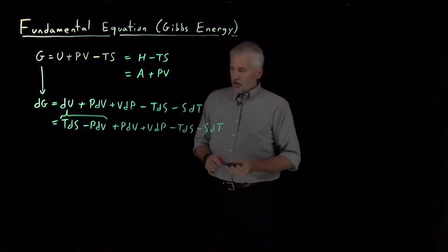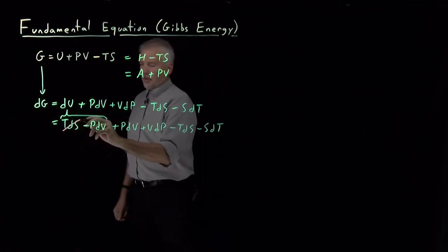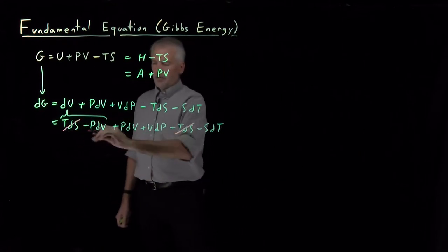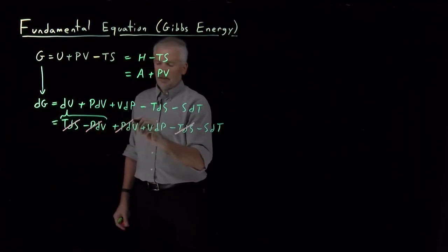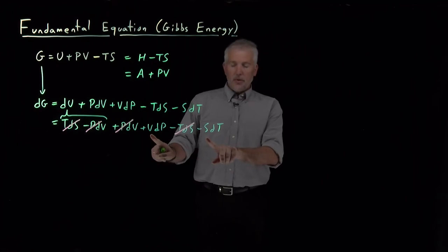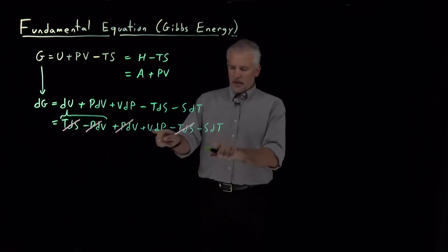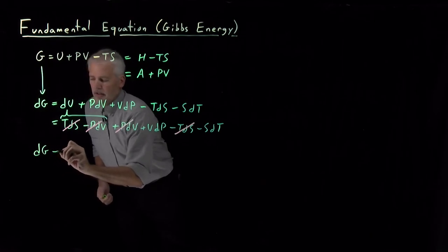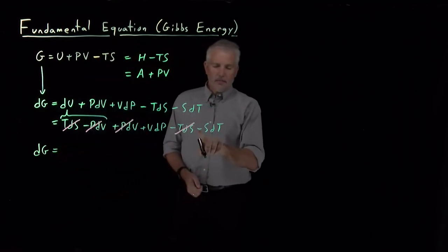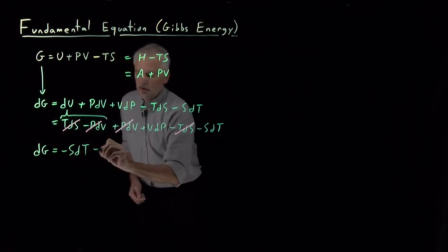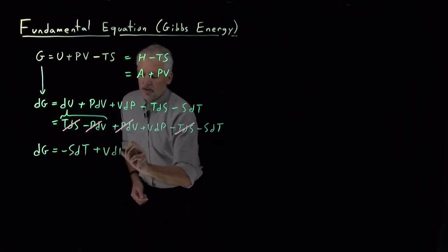There's now quite a bit of cancellation that happens. This TDS term cancels a minus TDS term. I have a minus PDV term that's going to cancel a positive PDV term, leaving us with just two of these when we're done. And if I switch the order of those two, I'll write this fundamental equation for DG as minus S times the change in temperature plus volume times the change in pressure.